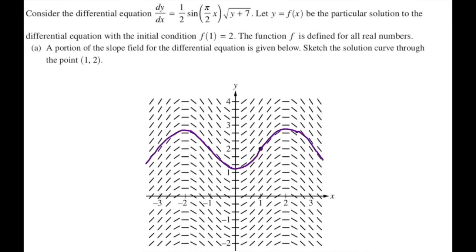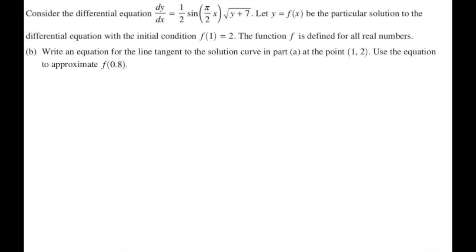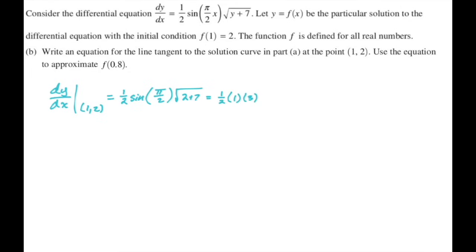For part B, write an equation for the line tangent to the solution curve at the point 1, 2, and use it to approximate f of 0.8. For the slope, evaluate dy/dx at (1, 2): 1/2 times sine of pi over 2 times the square root of 2 plus 7. Since sine of pi over 2 is 1 and the square root of 9 is 3, we get 1/2 times 1 times 3 equals 3/2. The tangent line is y minus 2 equals 3/2 times the quantity x minus 1. For f of 0.8: approximately 2 plus 1.5 times (0.8 minus 1), which gives approximately 1.7.